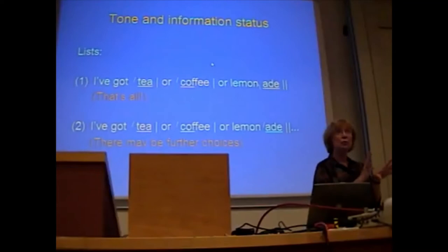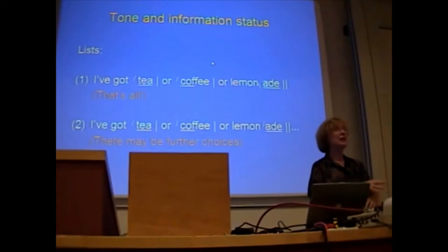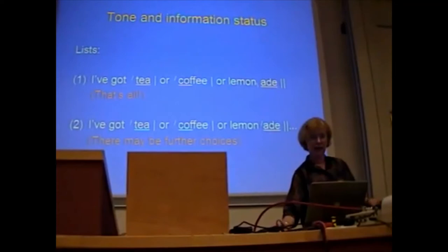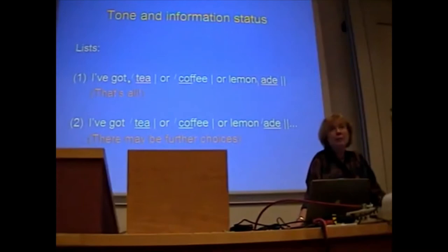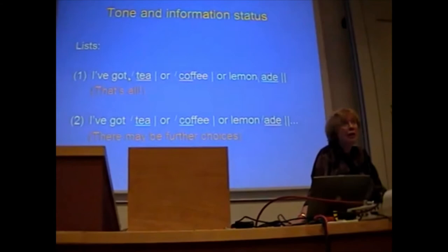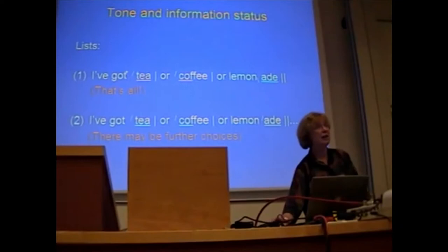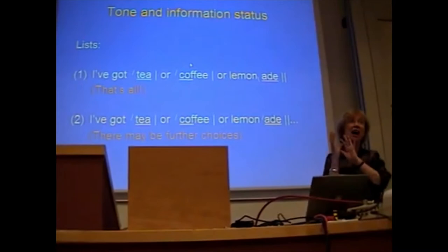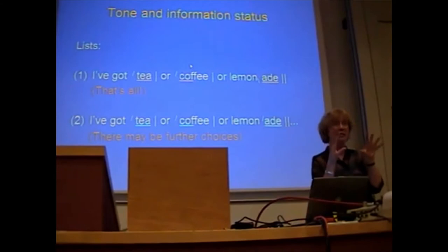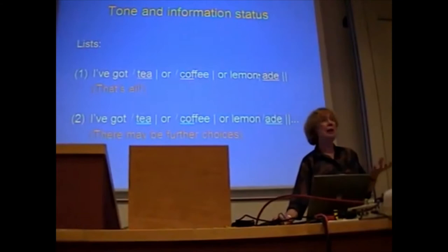When we get to the end of a list, if we want to signal finality, we use the sort of intonation I'm showing here. So: 'I've got tea, or coffee, or lemonade.' The first two items in the list are rising in pitch — the end point is higher than the baseline, which signals continuity. But when I get to the end — 'lemonade' — I've got right down to my baseline. So that's it, folks, nothing else on offer.